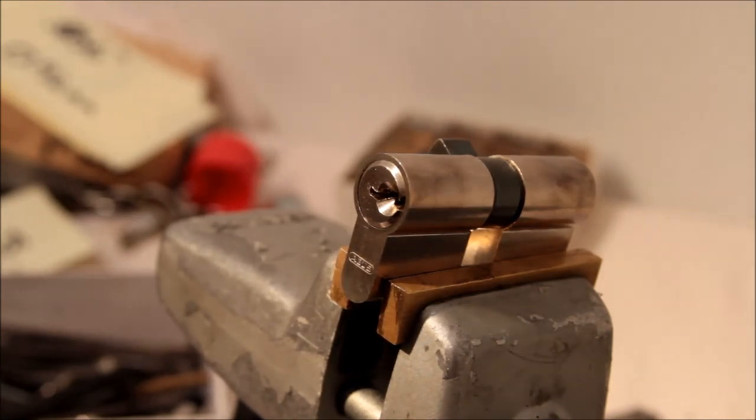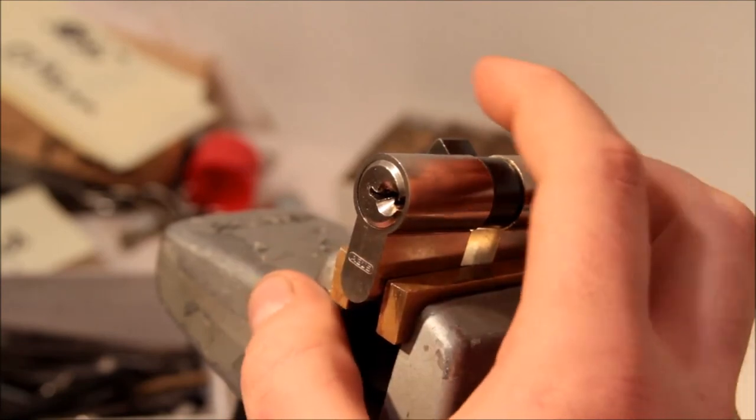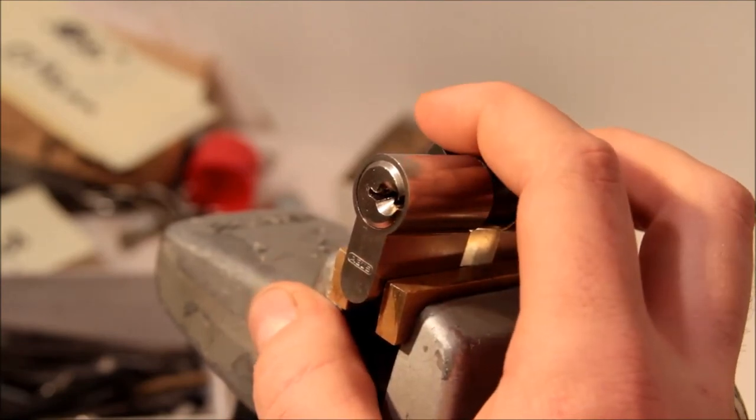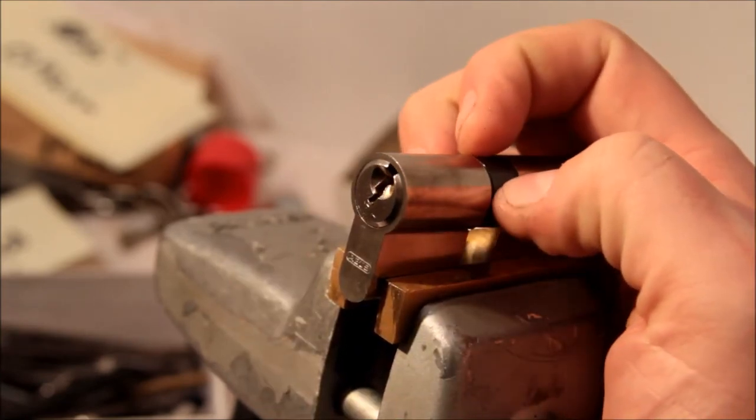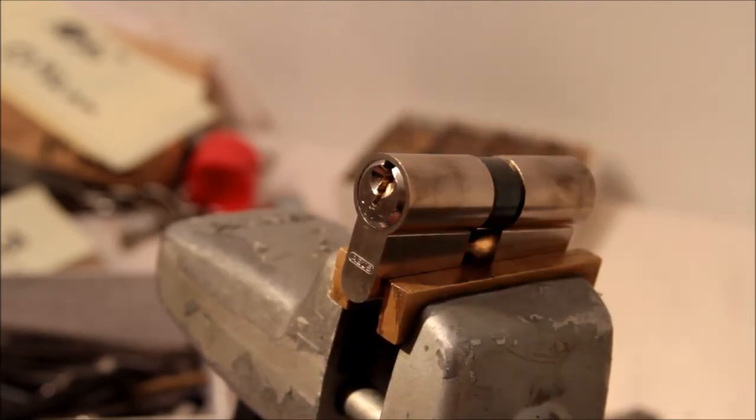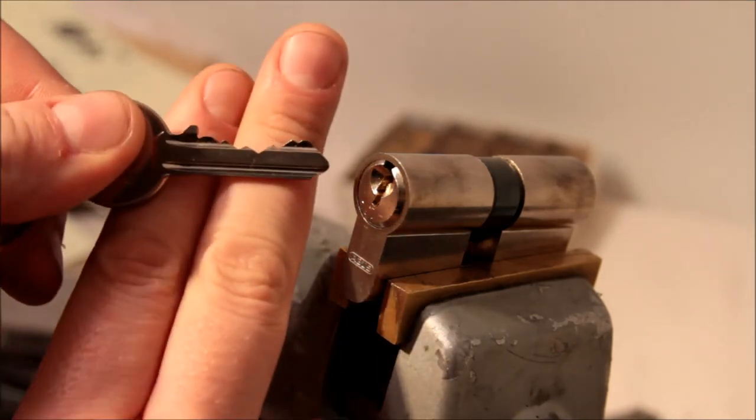This is an Abus Euro profile double cylinder. I think it's a model 83, but I can't remember. I don't think it came with a box. There's the key bitting there.